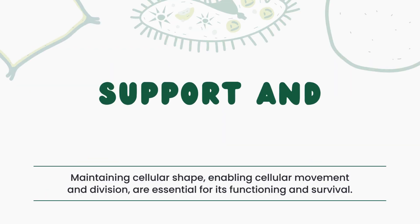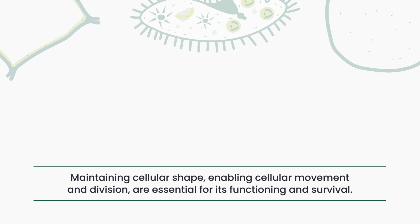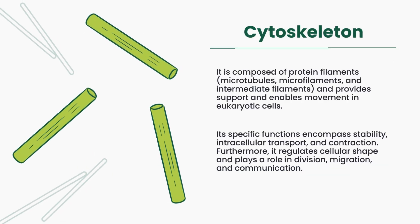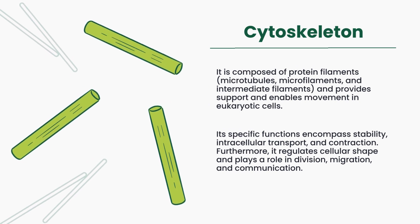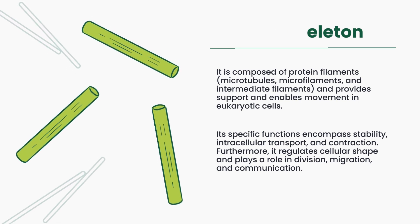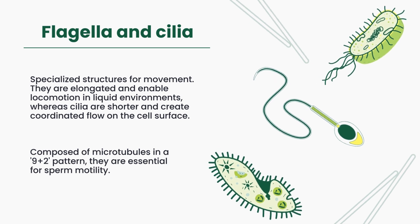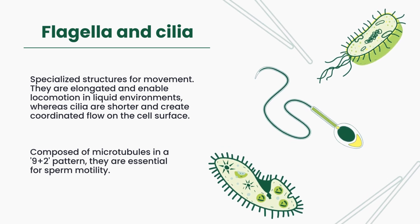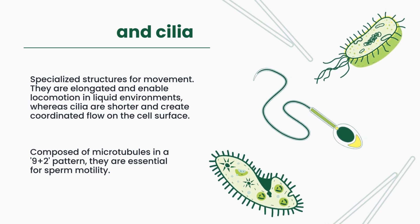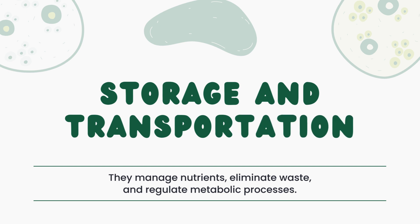The cytoskeleton provides support and enables movement in eukaryotic cells. Flagella and cilia are specialized structures for cellular locomotion; they are essential for sperm motility. Vacuoles, vesicles, and endosomes manage nutrients, eliminate waste, and regulate metabolic processes, ensuring cellular homeostasis.